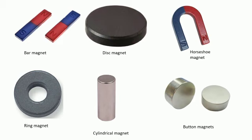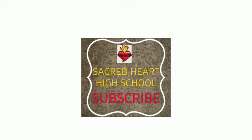Magnets have a variety of shapes depending upon their uses. Today, magnets are used in many machines and gadgets. These are all man-made magnets: bar magnets, disc magnets, horseshoe magnets, ring-shaped magnets, cylindrical magnets, and small button magnets are the different shapes of magnets in everyday use. I hope you have understood this part. Thank you.